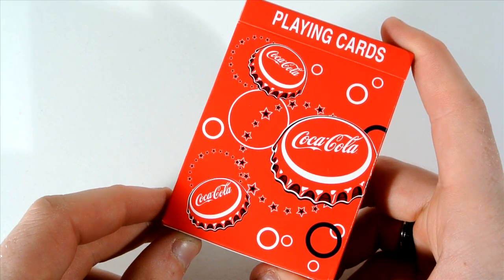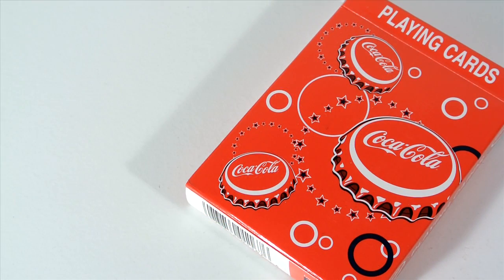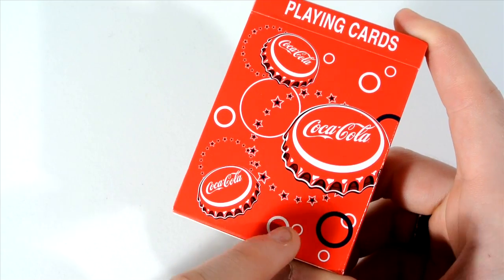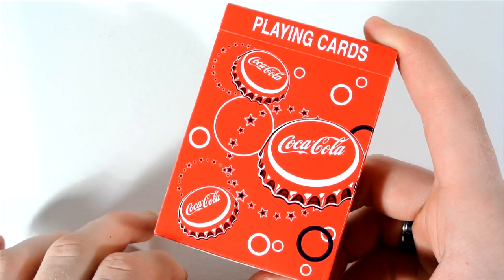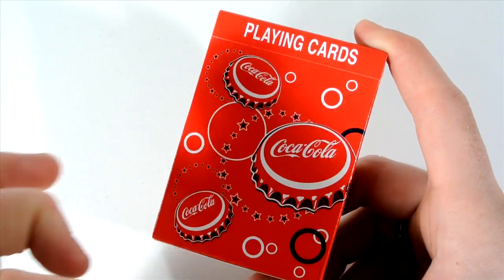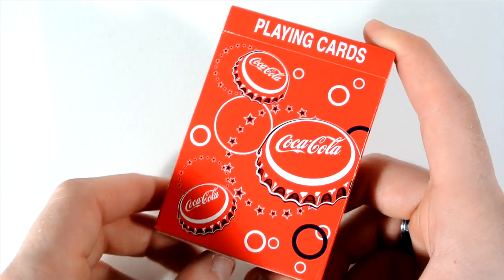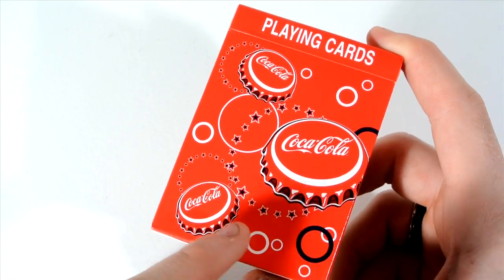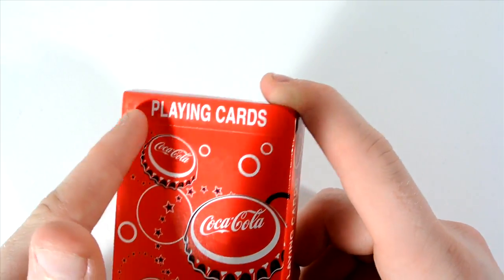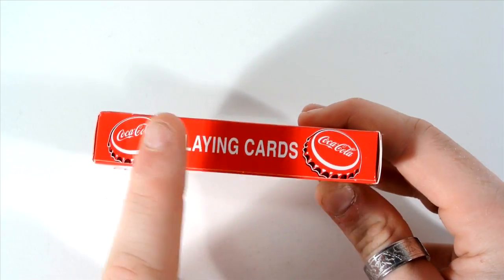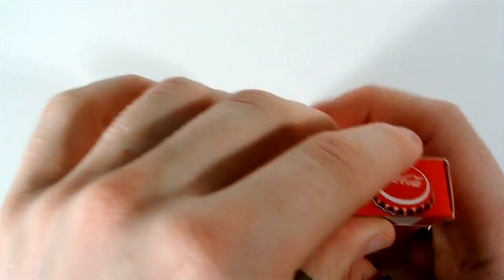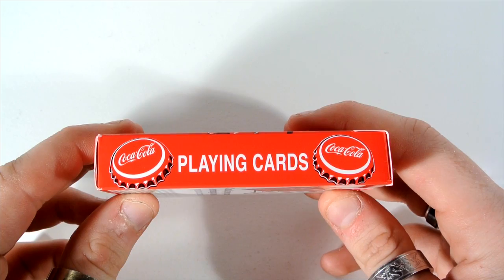As you can see it has playing cards on the front and it has Coca-Cola with a bottle top there and there and there. It has little mini circles to resemble bottle tops floating around. It has the color red because obviously that is just the famous color they use. It has blue, white and it has stars going around as well. It has playing cards on the top with two Coca-Cola bottle tops just there and there. And it also has the exact same on the other side.